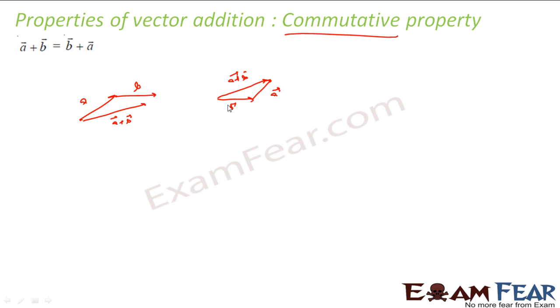You say a plus b, you get this. You say b plus a, you get this. And both are same. So you add the way you want, you get the same value. That is called commutative property.